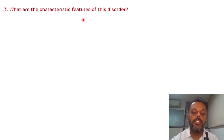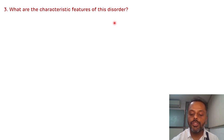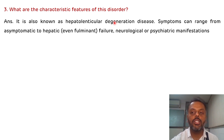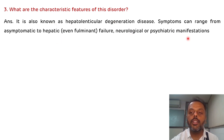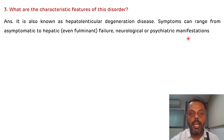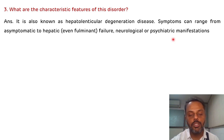The third question is: what are the characteristic features of this disorder? The characteristic feature is hepatolenticular degeneration. Symptoms may range from asymptomatic to liver failure. Neurological or psychiatric manifestations include tremor, dystonia, mood swings, and psychosis — these are various manifestations that can be seen in Wilson's disease.